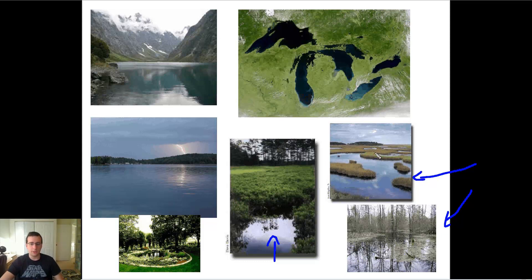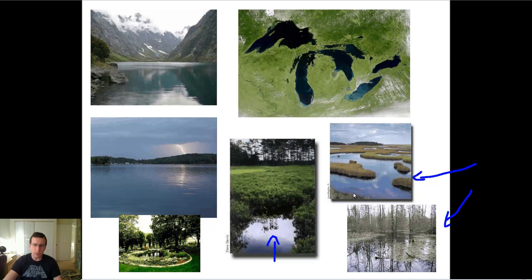Sometimes marshes are not actually lakes — they're very slow-moving rivers. For example, in Florida we have a big marsh that's basically the sawgrass Everglades, which is actually a very slow-flowing river, not really a lake, but a very important ecosystem either way.